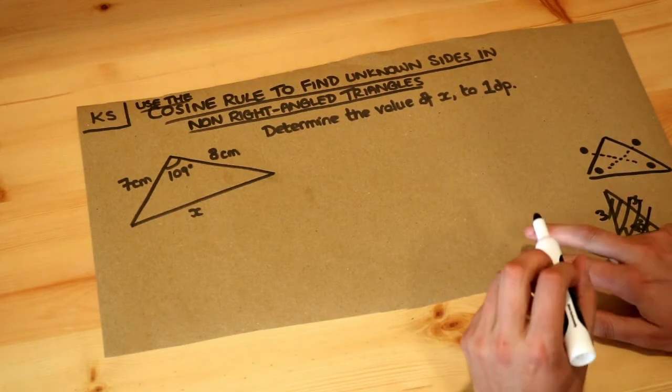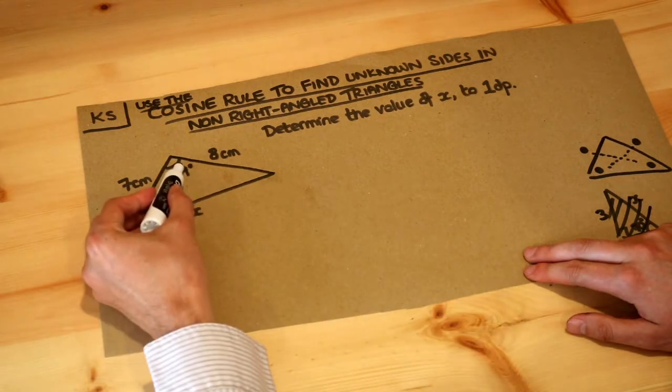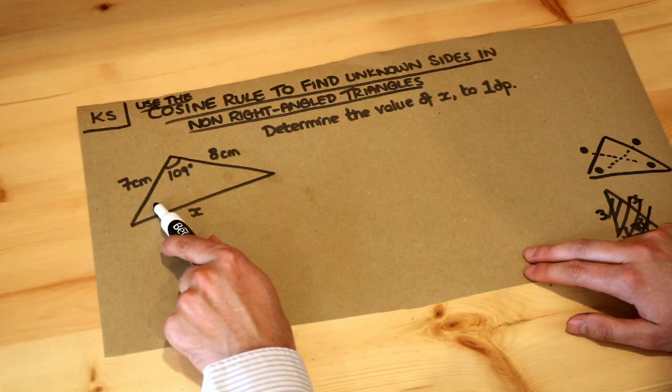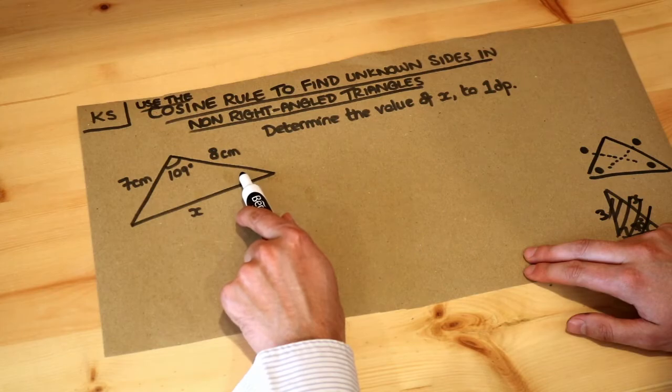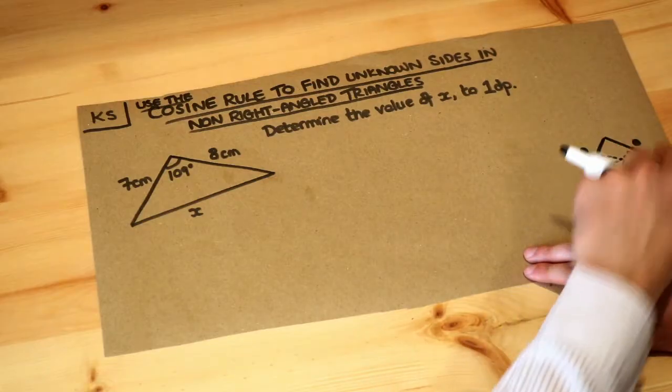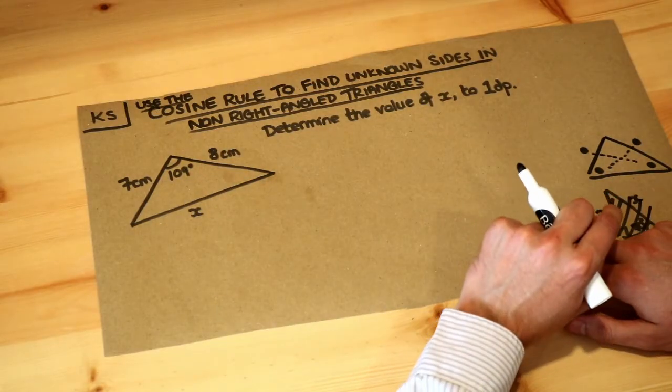However, that's not the case here. We've got a side and an opposite angle involved, but we don't have a second angle involved. This angle is neither known nor an angle we want to find out. Again, this is neither an angle we know nor one we need to find out, so we can't use the sine rule here because we're not involving two angles, we're only involving one angle.